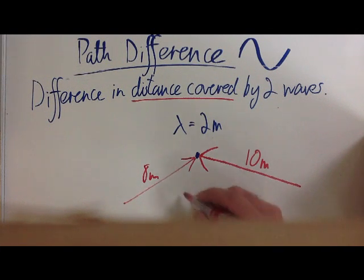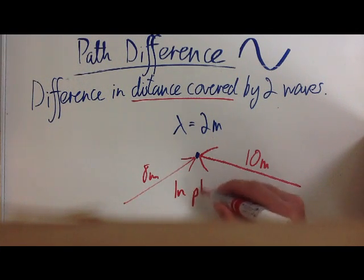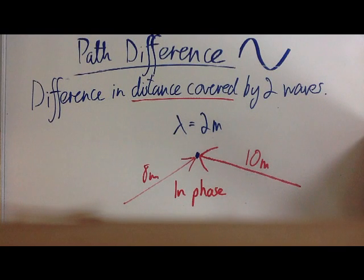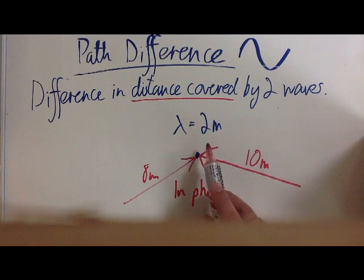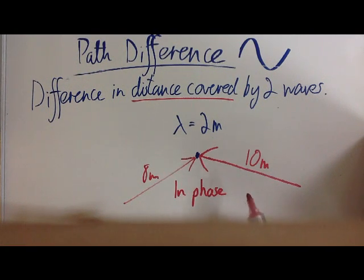Now this is significant because both these waves will arrive in phase. There's another video on this channel about being in phase or anti-phase and what that means. So these waves are arriving in phase with a path difference equal to one wavelength, so they will interfere constructively.